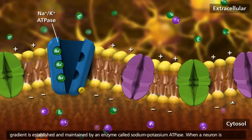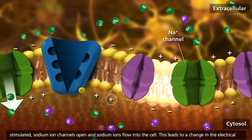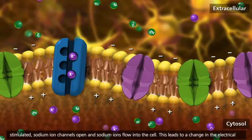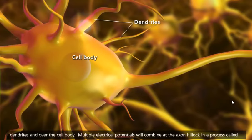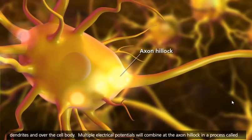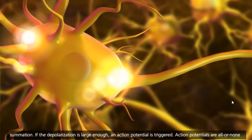When a neuron is stimulated, sodium ion channels open and sodium ions flow into the cell. This leads to a change in the electrical potential across the membrane called depolarization. The depolarizing electrical potential travels down the dendrites and over the cell body. Multiple electrical potentials will combine at the axon hillock in a process called summation. If the depolarization is large enough, an action potential is triggered.